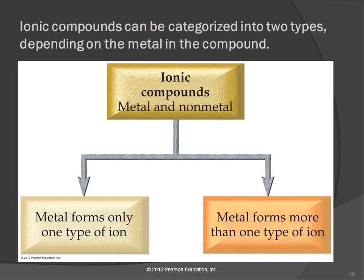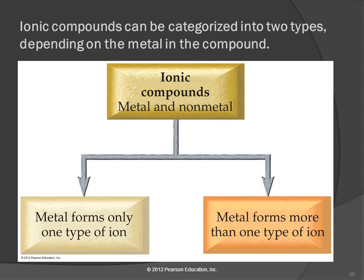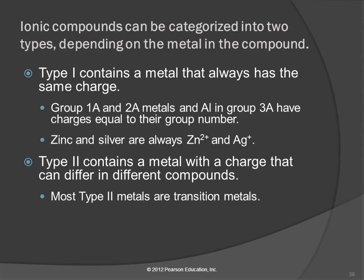We divide ionic compounds into different categories. An ionic compound has a metal and a non-metal, and we divide those into two groups: one where the metal forms only one kind of ion, and one where the metal forms more than one kind of ion. Type I ions always have the same charge — they form one ion. Those are in groups 1A, 2A, 3A, and then zinc and silver. Zinc is always +2 and silver is always +1.